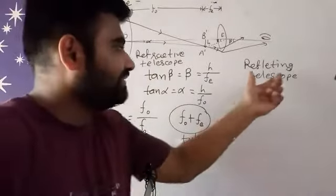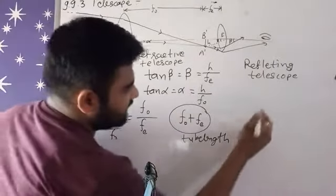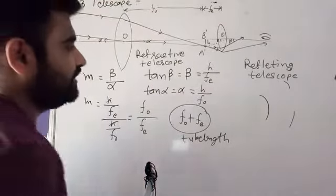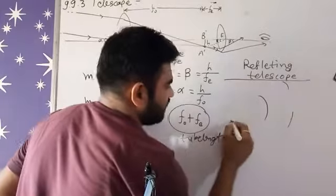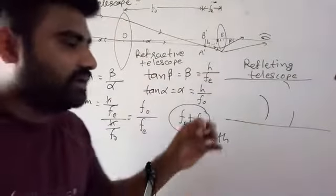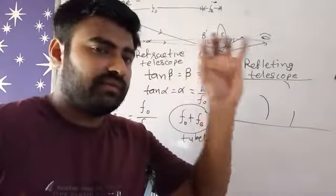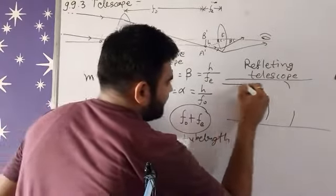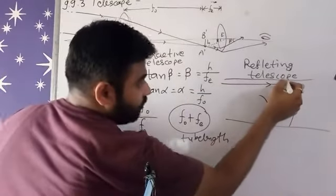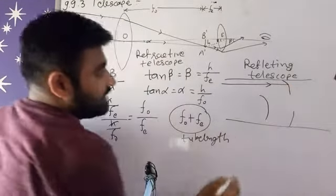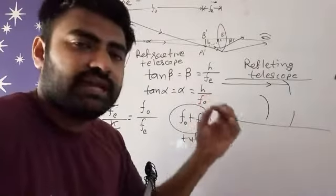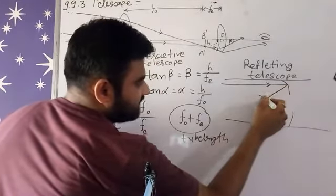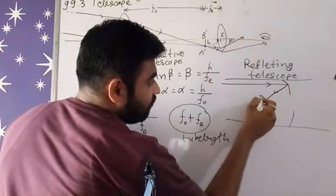So here now we are talking about this reflecting telescope. Basically in this reflecting telescope, two mirrors have been used. This whole arrangement is inside one chamber. We are talking about the mirror arrangement, and after the reflection from here, it will go straight.